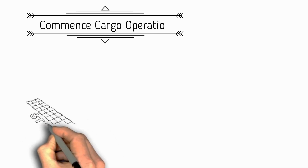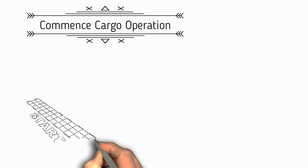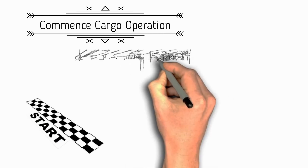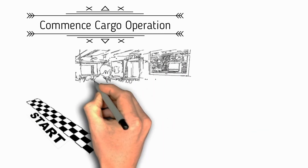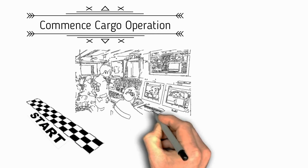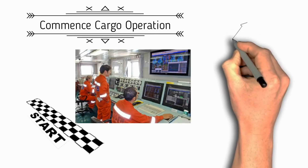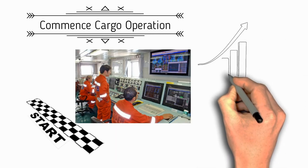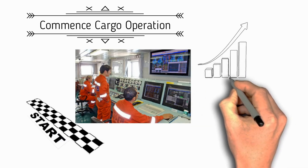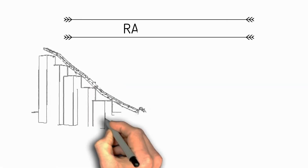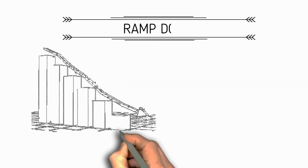Next is start of LNG operation. When cargo lines and cargo tanks are already cold, the vessel is ready to receive or discharge bulk quantities of LNG — this is the official start of cargo operation. The operation should begin slowly, gradually increasing the loading or discharging rate until reaching the maximum agreed rate.